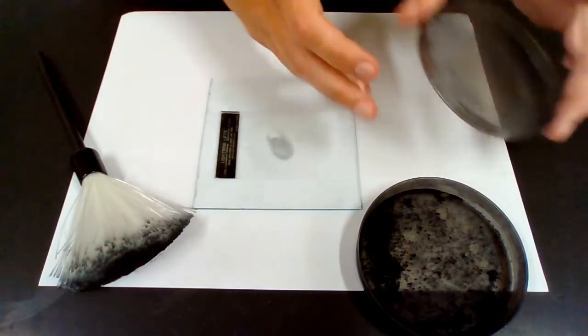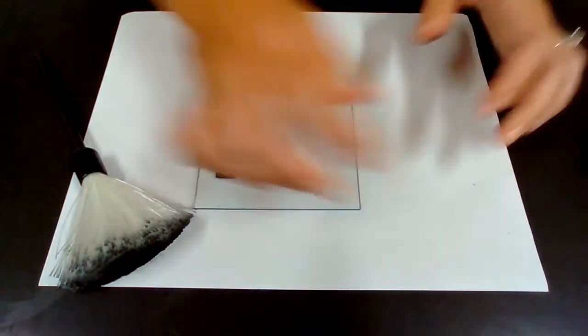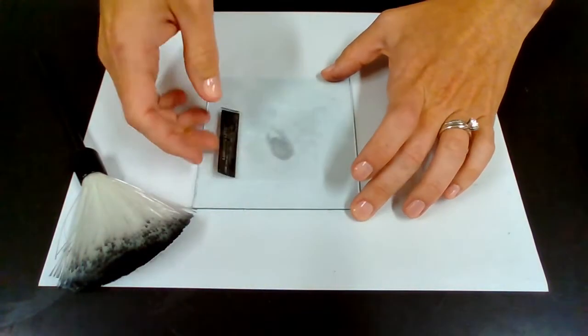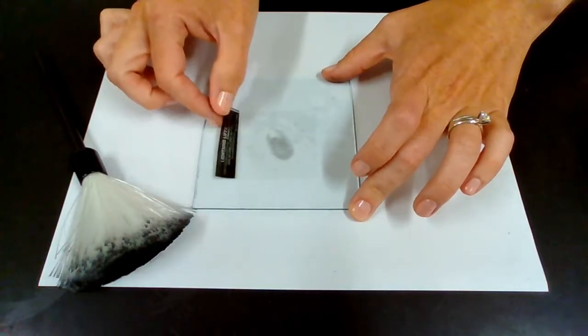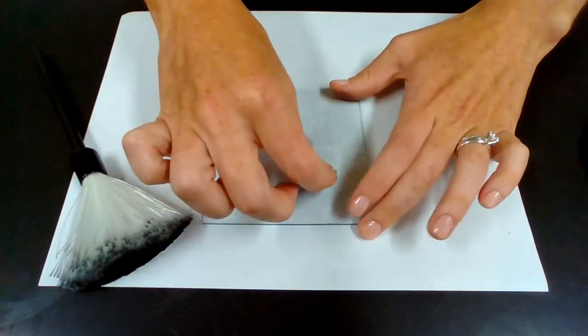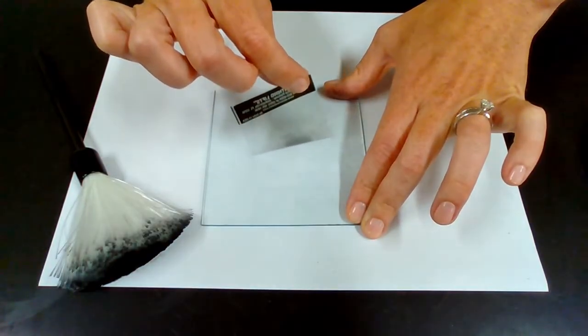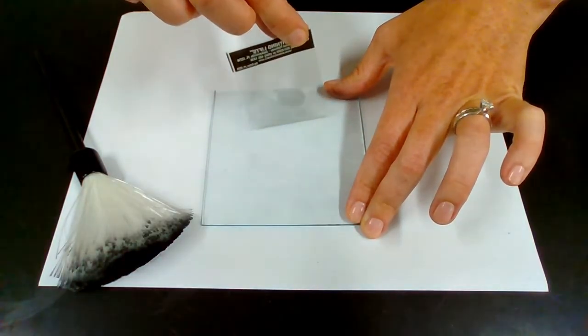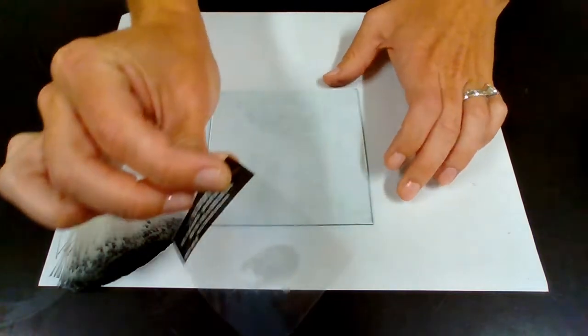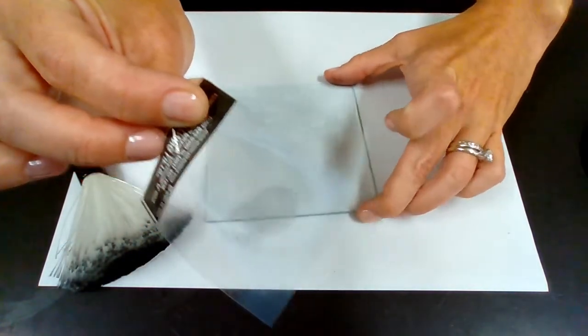Let's cover this without making a bigger mess. Now remember, this tab was not a sticky part. So I'm able to use this tab to pull, and you can see it has lifted that fingerprint that we dusted. So it's lifted there.